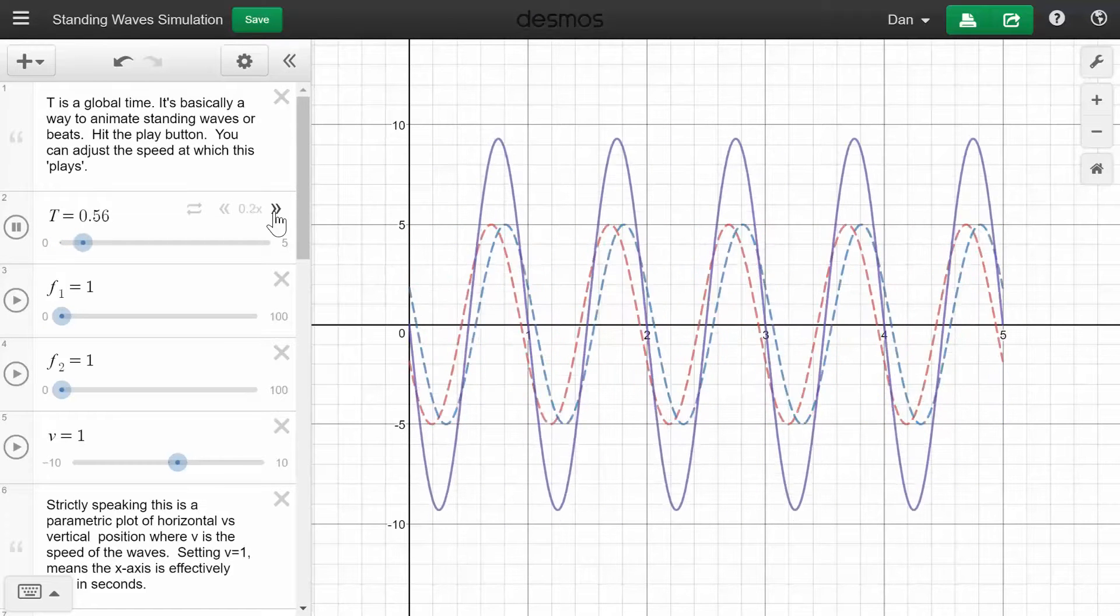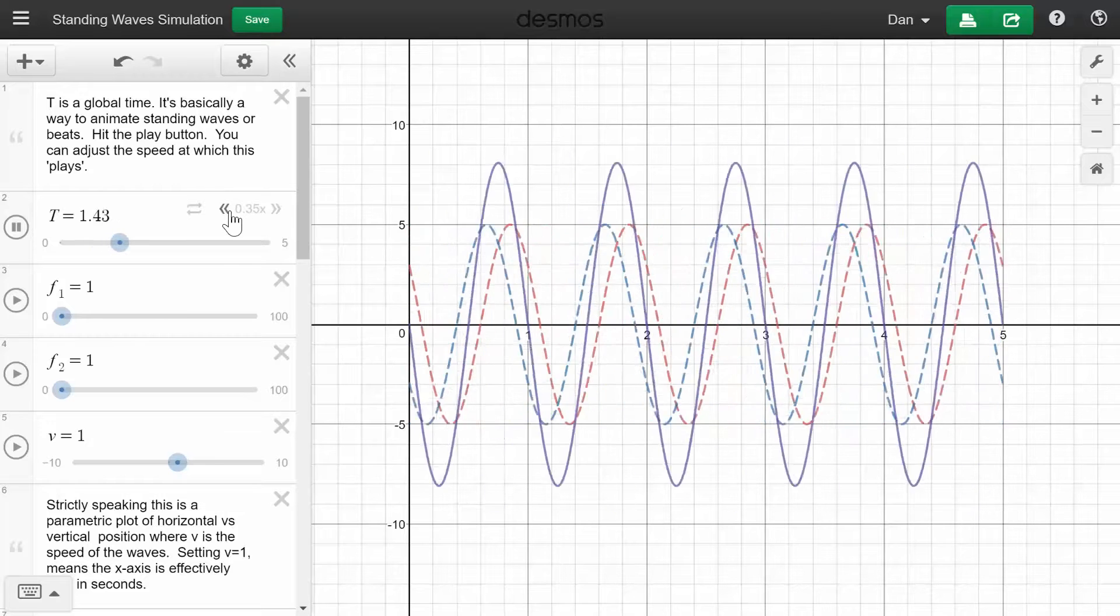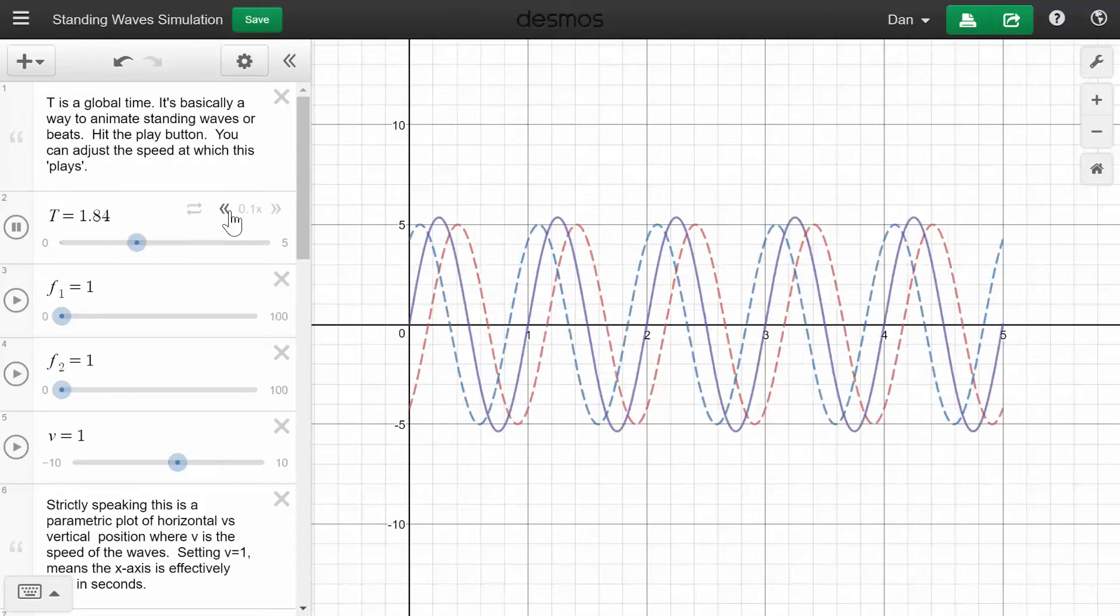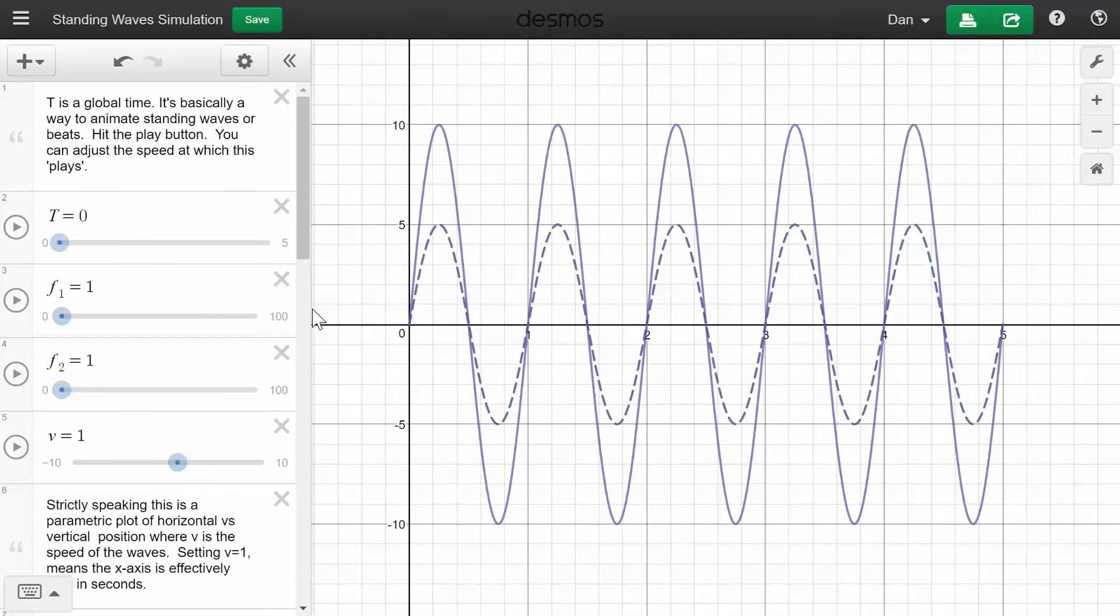I can also change the pace at which this is going with these little slider bars. I really do like this Desmos stuff. Now you can also show the phenomenon of beats. So let's say you wanted to have a 50 Hz and a 52 Hz. What would that look like?